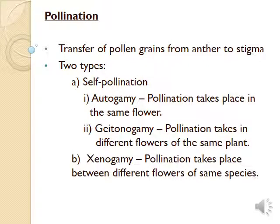The first topic is pollination. Pollination means transfer of pollen grains from anther to stigma. These are two types: self-pollination and cross pollination. Self-pollination is of two types. One is autogamy — transfer of pollen grains from anther to stigma of the same flower, which takes place in bisexual flowers. Another one is geitonogamy.